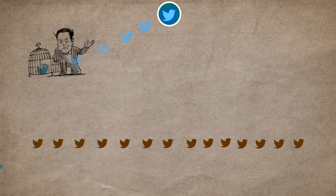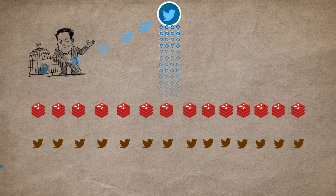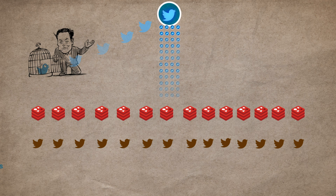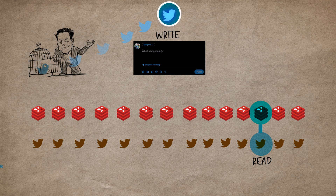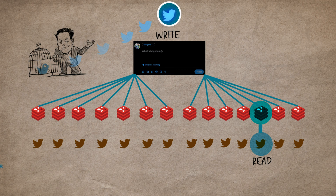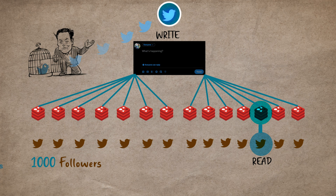They pre-computed the home timeline of all users and stored it in a Redis cluster. So when a user visits the homepage of Twitter — a read request — Twitter looks for the cached or pre-computed home timeline in one of the Redis clusters and shows it to the user as-is. When the user sends a tweet, which is a write request, that tweet is replicated across all the timelines of the user's followers. Whenever you post a tweet, it is inserted into the home timeline queue of each of your followers. So if you have 1,000 followers, your tweet will have 1,000 writes.